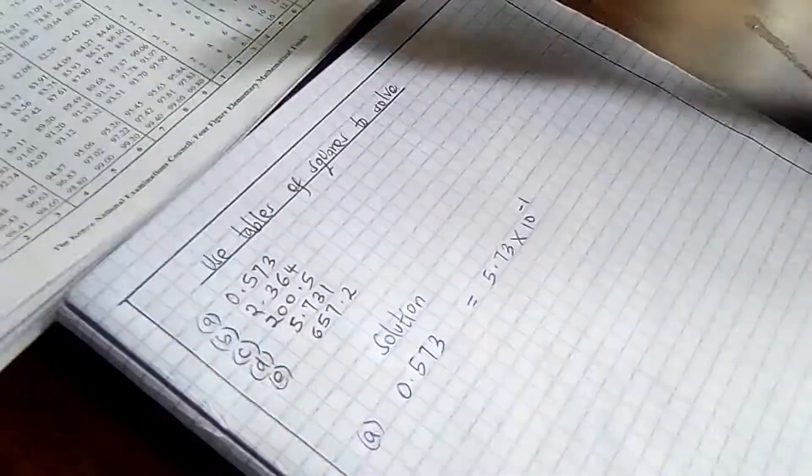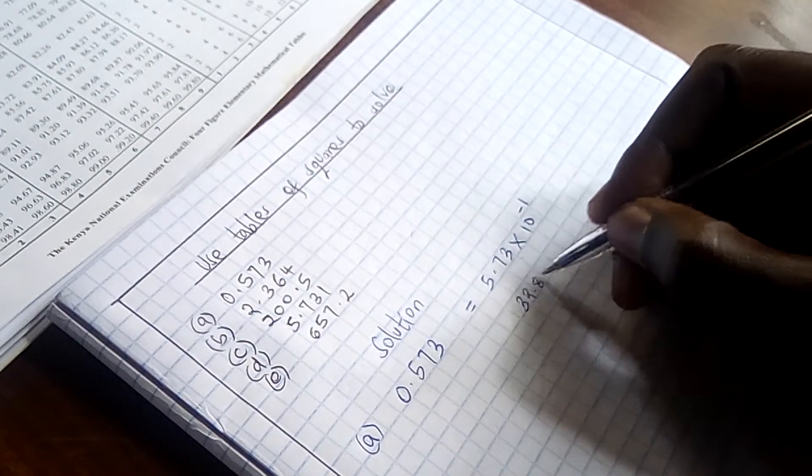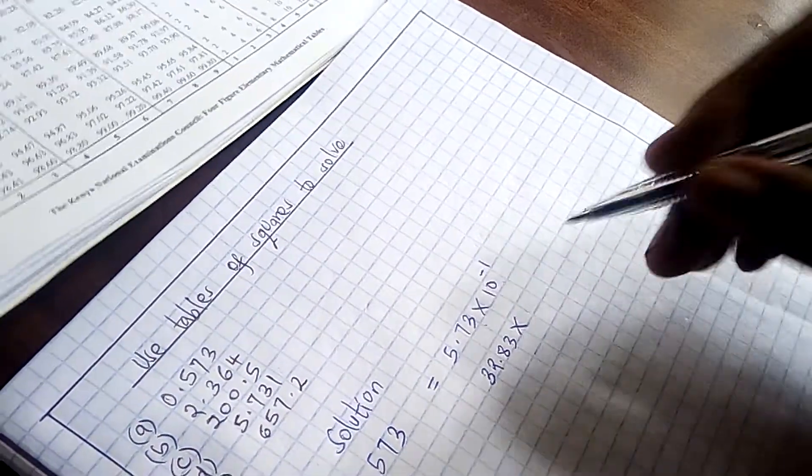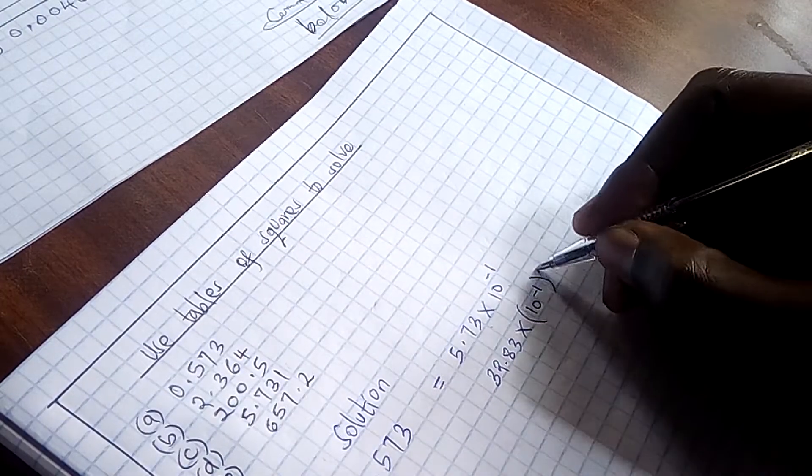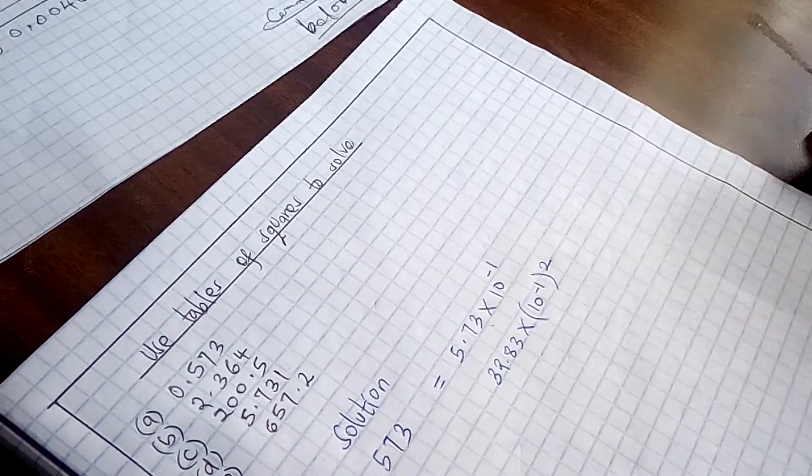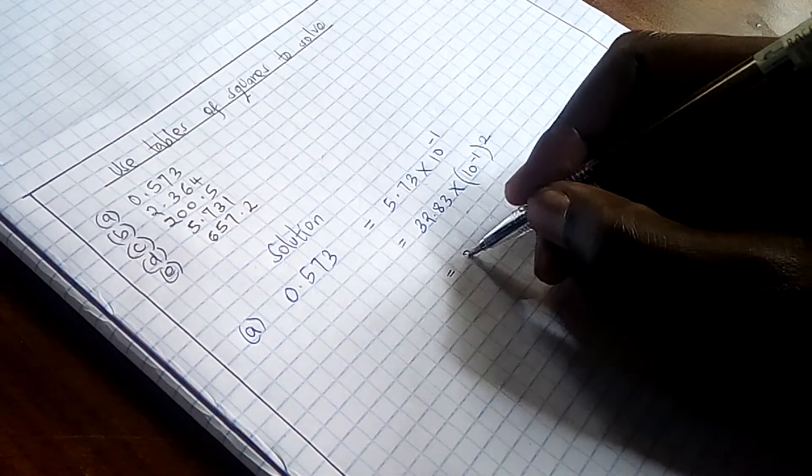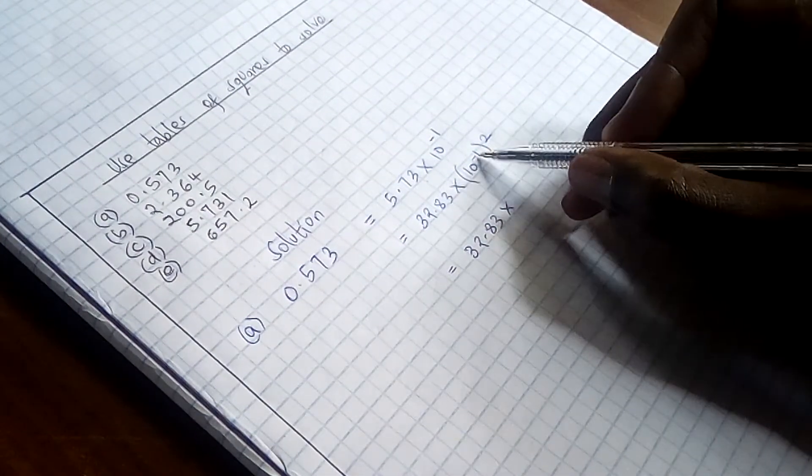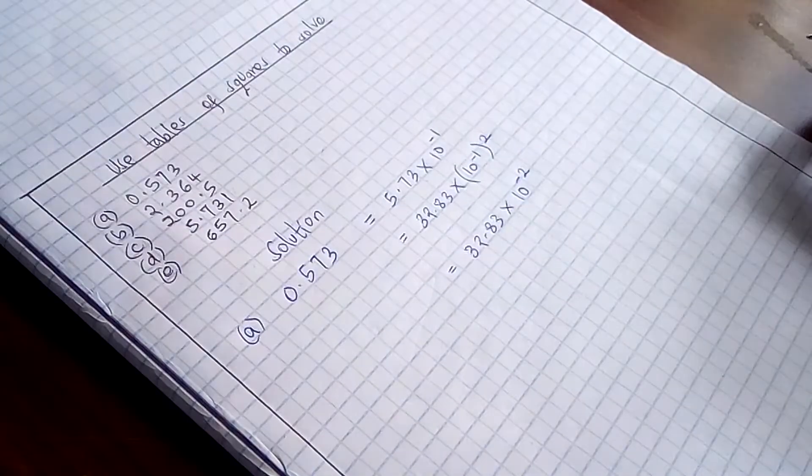So we are going to have the square of this as 32.83 times, what is the square of 10 raised to power negative 1? This can be written as 10 raised to power negative 1, then we square. So this can also be written as 32.83 times, we can just multiply negative 1 by 2 so that we have 10 raised to power negative 2.